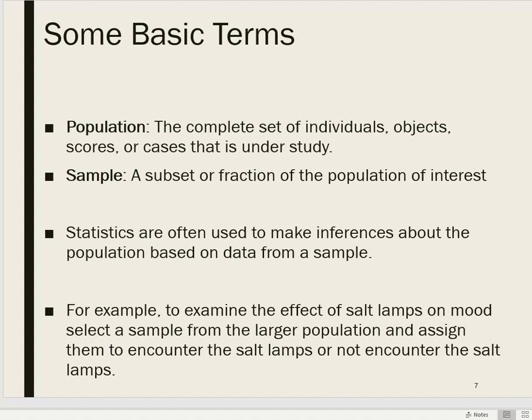For example, let's say we wanted to see if salt lamps have an effect on one's mood. We might select a sample of college students — they're nearby, easy to obtain, and we can give them extra credit to participate. We go through the IRB, get ethical approval to conduct this salt lamp study, and obtain a sample of college students.